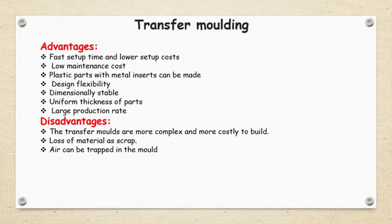Disadvantages of transfer molding: the transfer molds are more complex and more costly to build. There is more material loss as scrap because runners, gates, and sprues are trimmed off from the component. Air can also be trapped in the mold since raw material is forced through the sprue into the cavity.